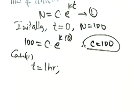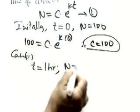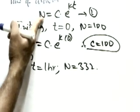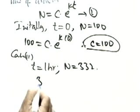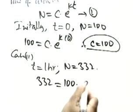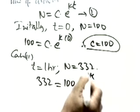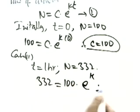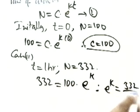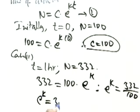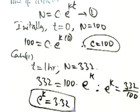Case 2: After one hour (t = 1), n = 332. Substituting: 332 = 100·e^(k·1). So e^k = 332/100 = 3.32. We get the value of e^k.